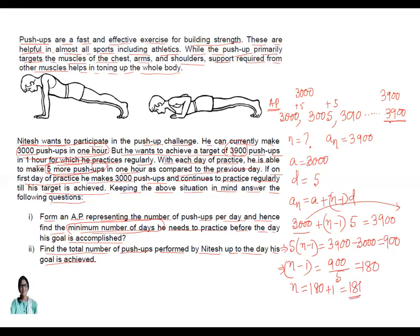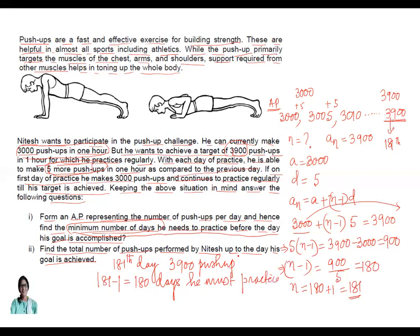So on 181st day, he will get 3900. But the question is what is the minimum days he needs to practice before the day. So in 181st day, he is getting 3900 push ups. So what is the minimum? Minimum should be 180. That will be 180 days he should practice. He must practice. Then only on 181st day he will get 3900 push ups. I hope it is clear.